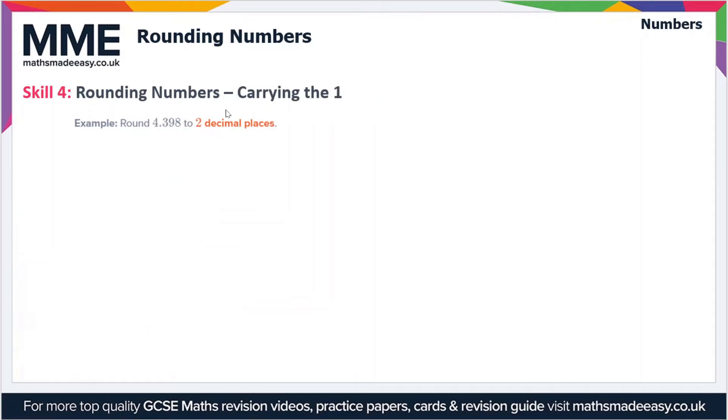So that's pretty much all there is to it. Moving on to the last skill then: rounding numbers, and in this case we're carrying the 1. So what does that mean? Well if we've got an example here of 4.398 and we're rounding to two decimal places, let's draw the cutoff point in here. So we've got 4.398, and obviously 8 is greater than 5, so we're going to have to round up.